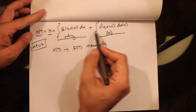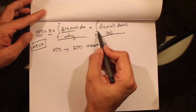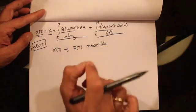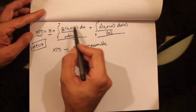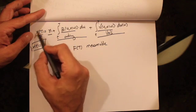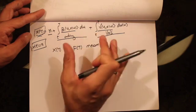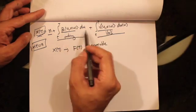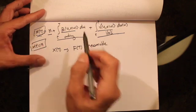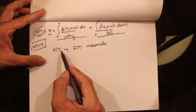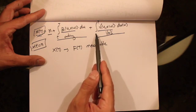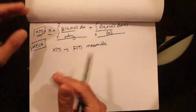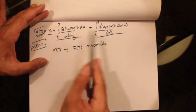Under certain conditions on β and γ, we can guarantee that a solution x(t) will exist and be unique. We are not going to discuss those conditions here, but you can refer to many stochastic differential equation books for the required conditions. For us, what we need to understand is that x(t) will be F_t-measurable and will only depend on the parts of the Brownian motion between times t and T. It is not always easy to find an explicit solution for x(t) for general functions.